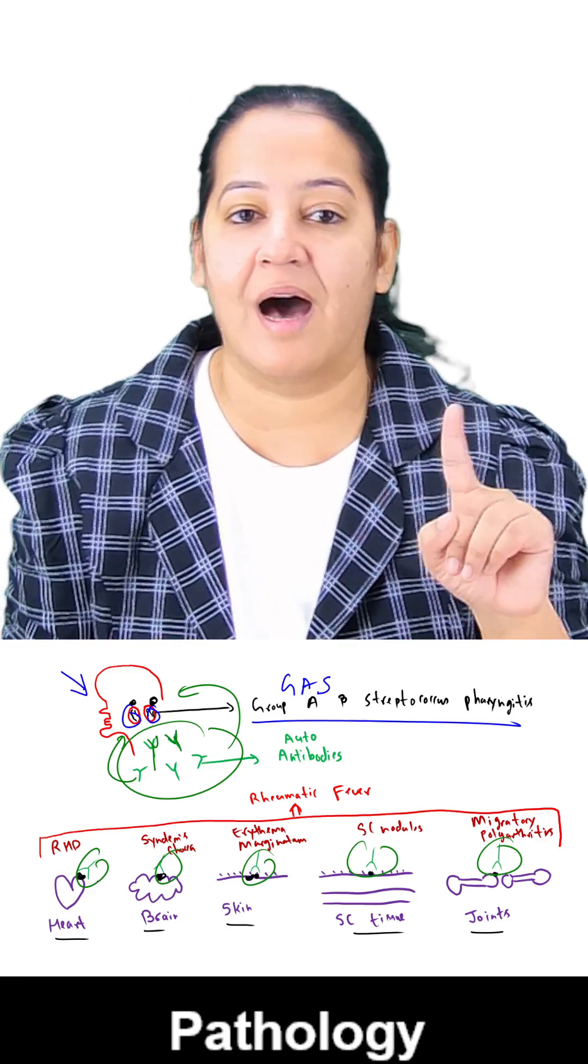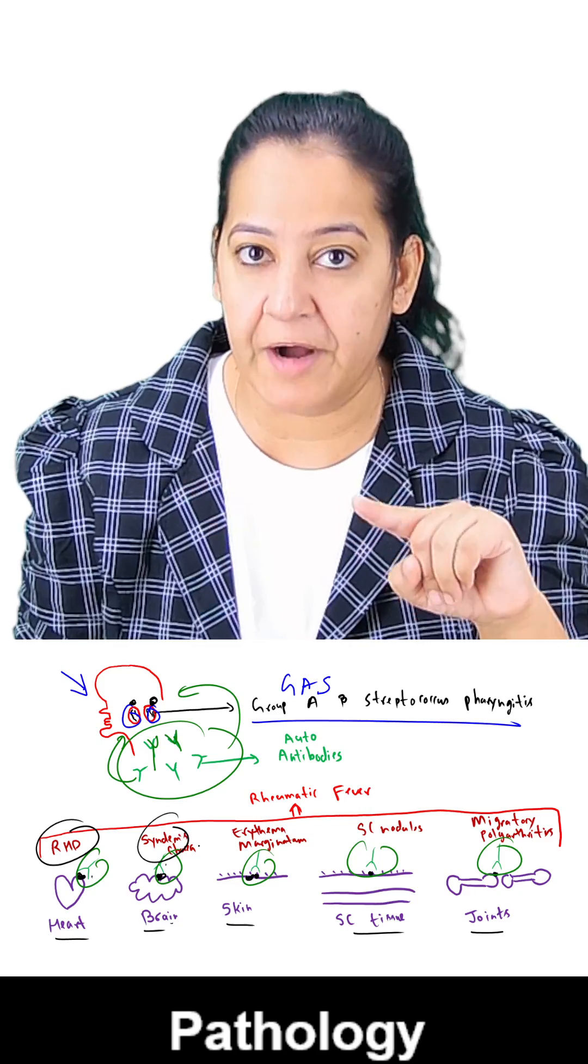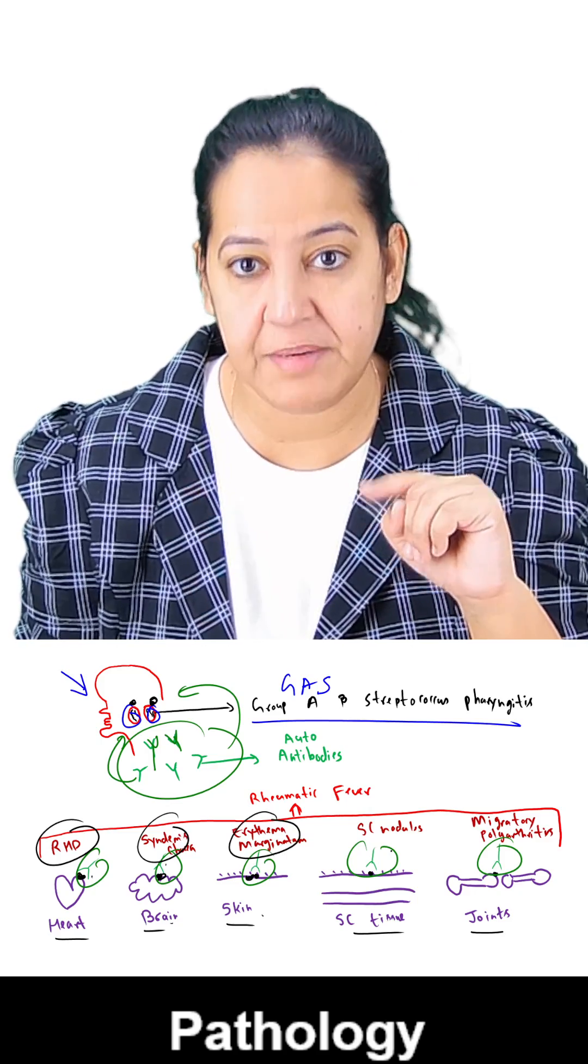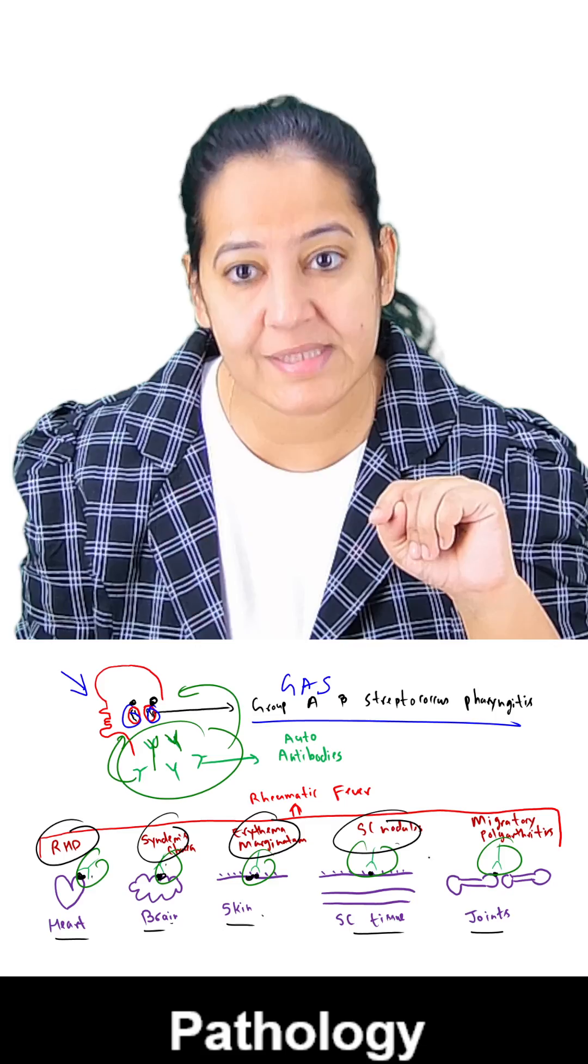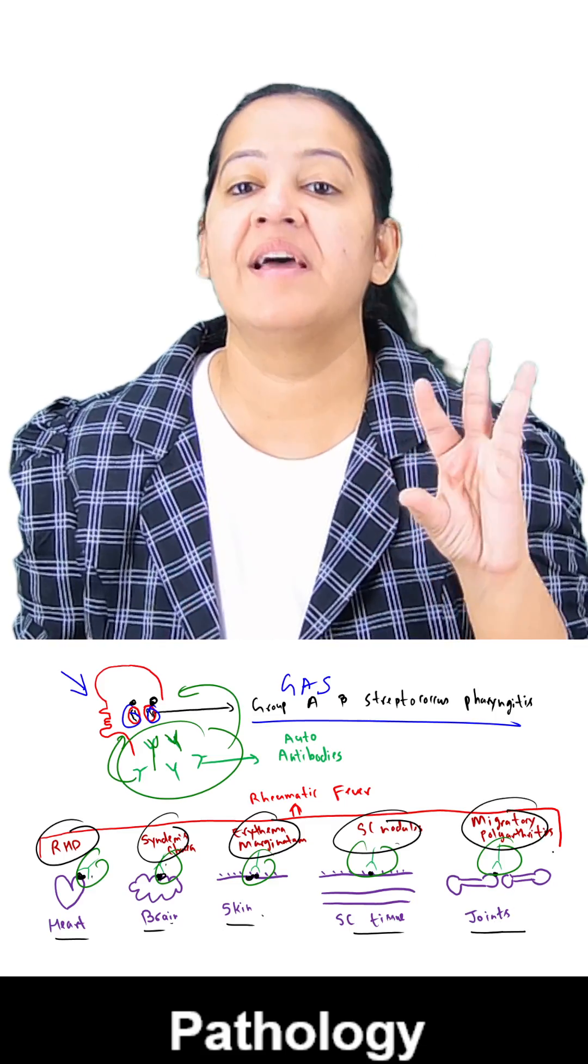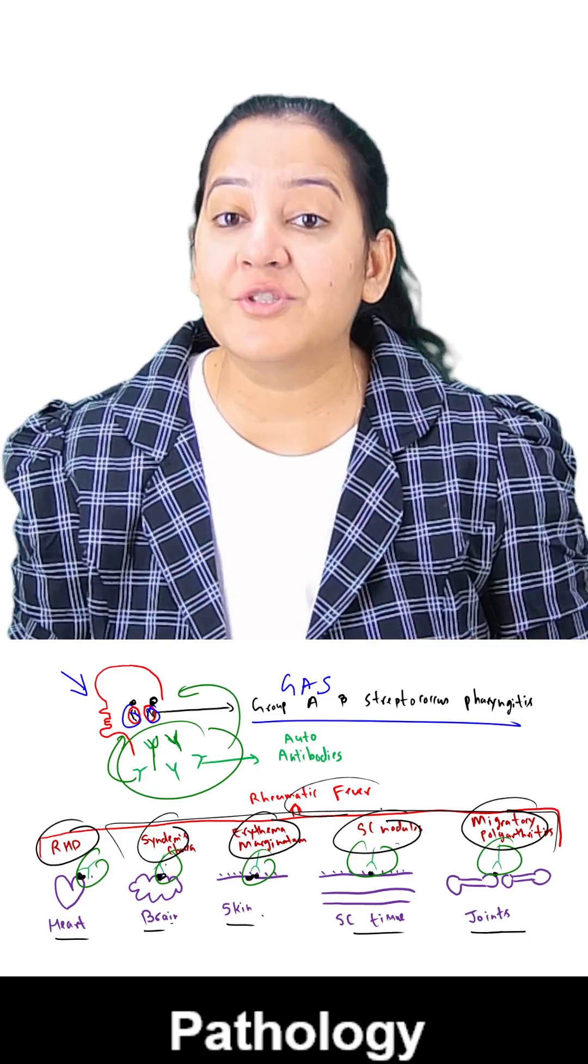So the five diseases are in the heart, it's carditis, in the brain, it's chorea, in the skin, it's erythema marginatum, in the subcutaneous tissue, it's nodule, and in the joints, it's migratory polyarthritis. The five diseases together known as rheumatic fever.